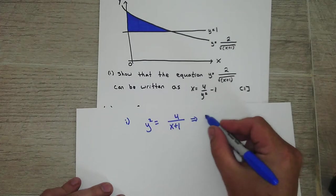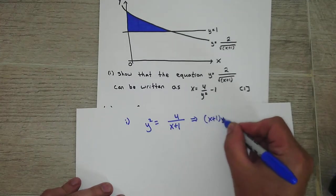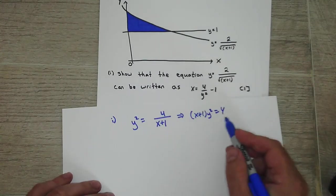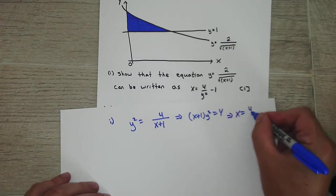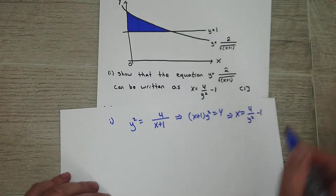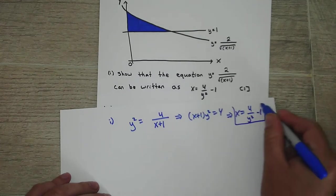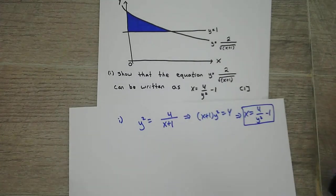Multiply this over, divide by the y squared, and then subtract the 1. And you'll get what they want. Okay, pretty easy. That was one point.